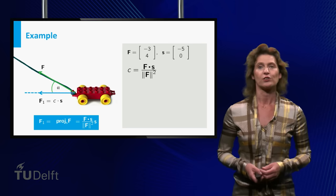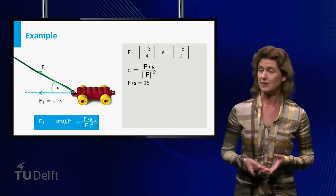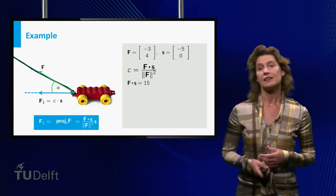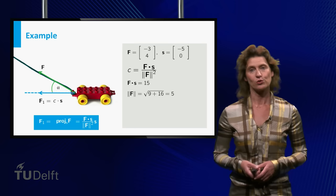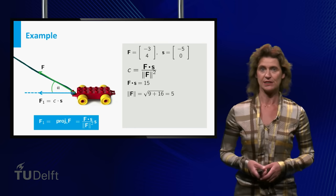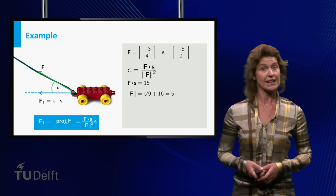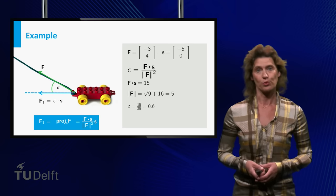The dot product of F and S is equal to 15. The length of F is equal to the square root of 9 plus 16, which is 5. So the scalar C is equal to 0.6.